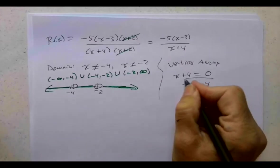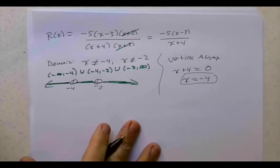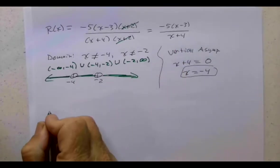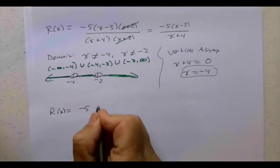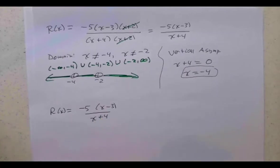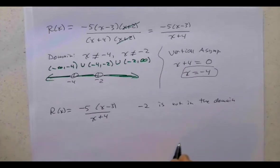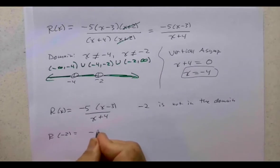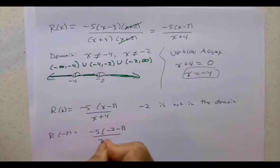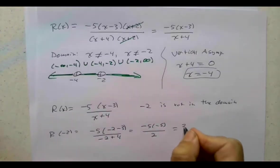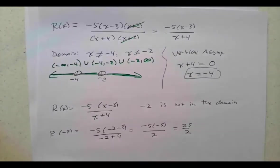What's happening at x equals negative 2? It's not in the domain, but if it were, what would r(negative 2) be? Using the simplified form: negative 5 times (negative 2 minus 3) over (negative 2 plus 4) equals negative 5 times negative 5 over 2, which gives 25 halves. So the y-value would have been 25/2, but we have to remove that point — this becomes a hole in the graph.